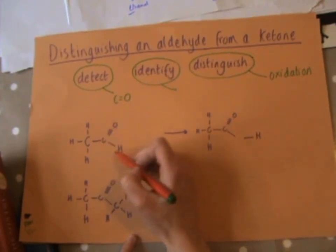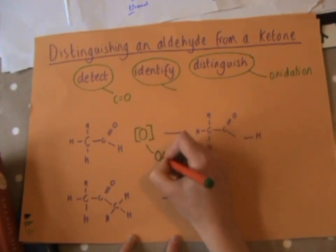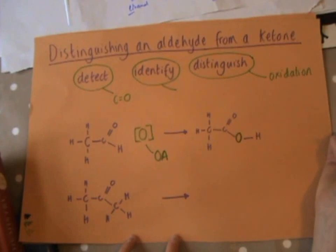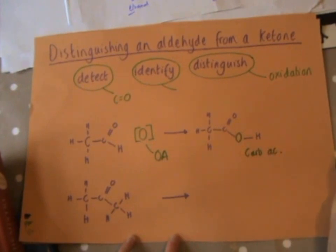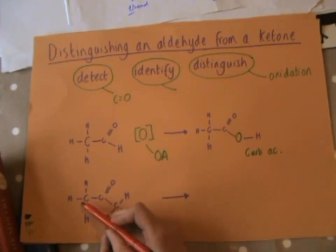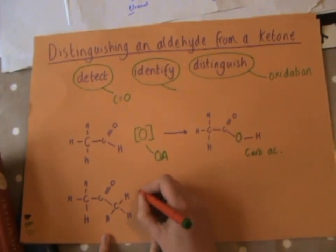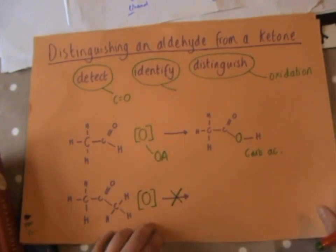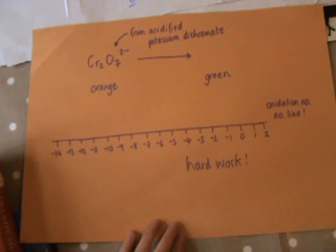Here we have an aldehyde — you can tell it's an aldehyde because it's got this hydrogen next to the carbonyl group. We're going to use an oxidizing agent to add an extra oxygen into that aldehyde to make our carboxylic acid. Here we have a ketone — you can tell it's a ketone because the carbonyl group is inside the carbon chain with a carbon on either side. If we added an oxidizing agent to the ketone, nothing would happen; the ketone would not oxidize.